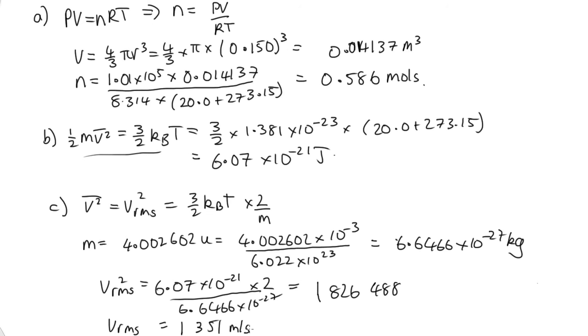So fairly fast. And because that's so fast, that's why so much helium has escaped the Earth's atmosphere. This helium, because it's so light, travels very quickly. And so it's more likely to exceed the escape velocity and escape from the Earth's atmosphere.